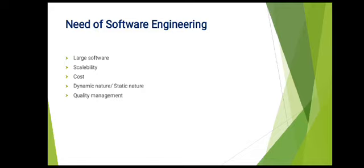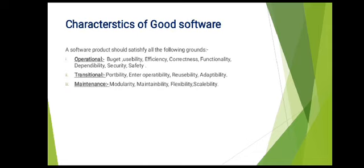The next need is dynamic nature. The always-growing and adapting nature of software hugely depends upon the environment in which the user works. If the nature of software is always changing, new enhancements need to be done in the existing one — this is where software engineering plays a best role, and this is known as its dynamic property. The next point is quality management: better processes of software development provide better quality software products.